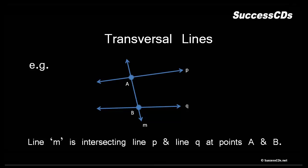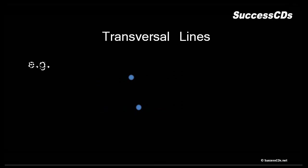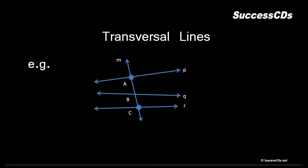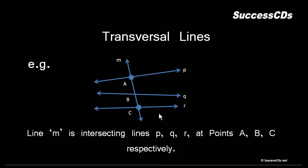Therefore we say line M is transversal to both line B as well as line Q. In another example, we have three lines P, Q, and R. Line M intersects line P at A, line Q at B, and line R at C. Therefore line M is called a transversal to all three lines P, Q, and R respectively.